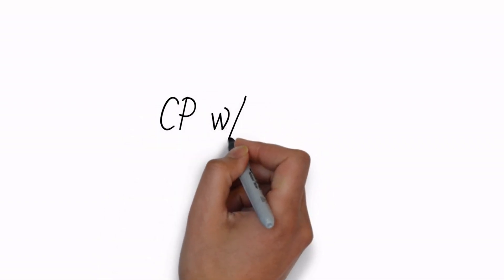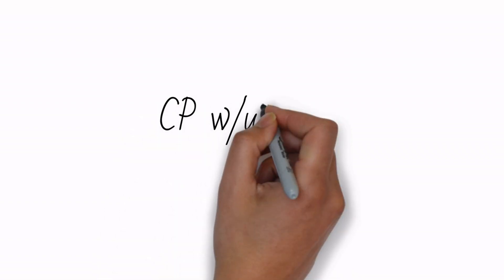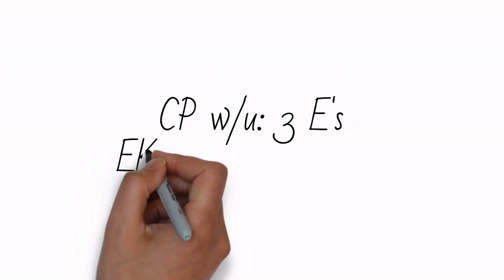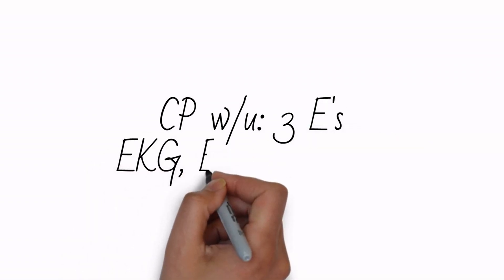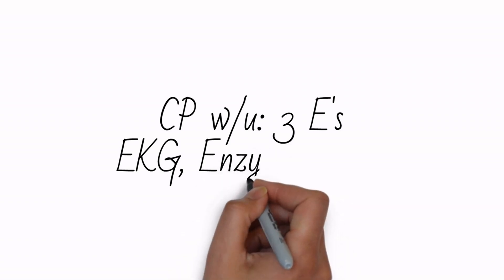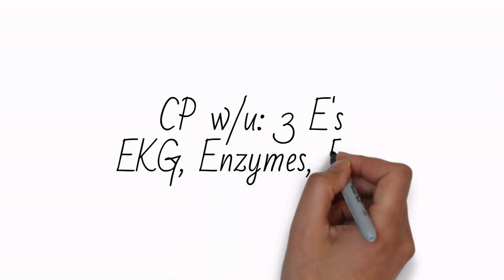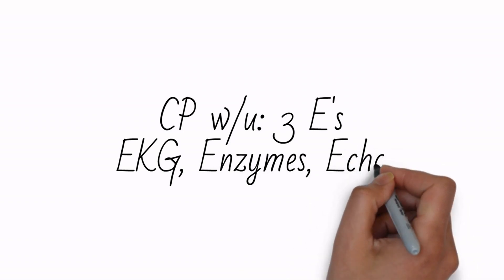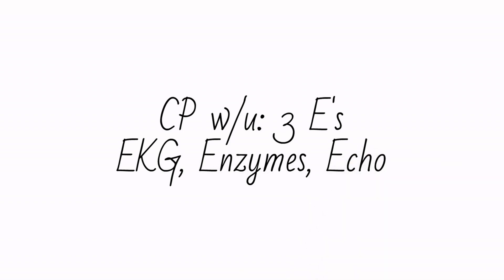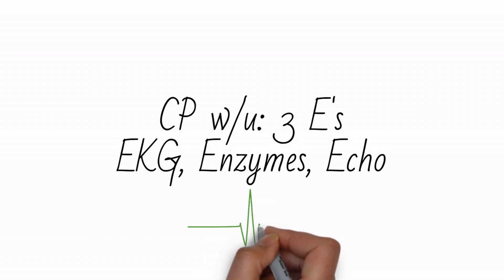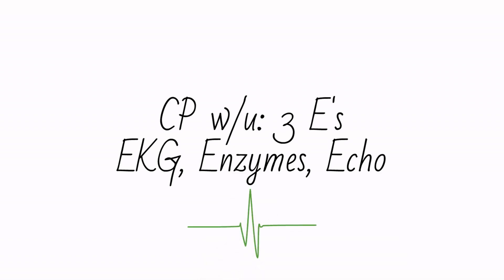Before discussing types of angina further, let's briefly discuss workup. Three hallmarks of chest pain workup are EKG, cardiac enzymes such as troponin, and echocardiogram. Signs of myocardial infarction include elevations in the ST segment of the EKG, elevated troponins — because within three to six hours of infarction enzymes spill from dead tissue — and wall motion abnormalities seen on echocardiogram.